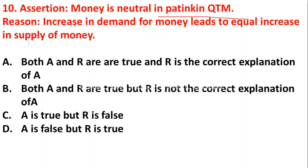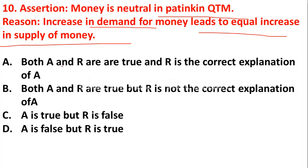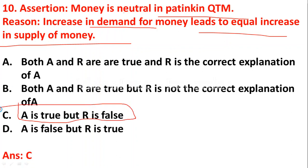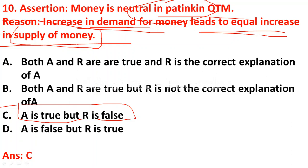Question number 10, assertion and reasoning: assertion — money is neutral in Patinkin's Quantity Theory of Money; reason — increase in demand for money leads to equal increase in supply of money. The right answer is option C: assertion is true but reason is false. Money being neutral in Patinkin's QTM is correct, but when demand for money increases, supply of money does not necessarily increase equally — so the reason is wrong.